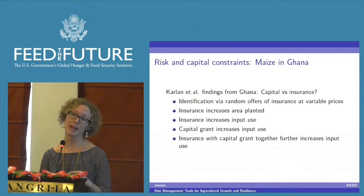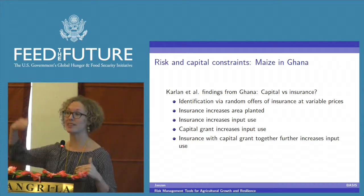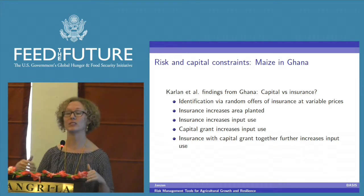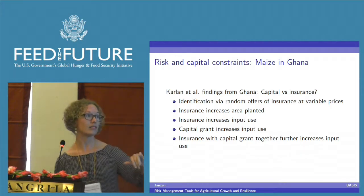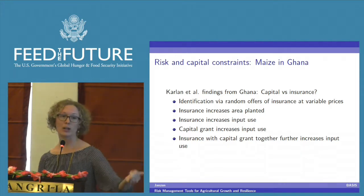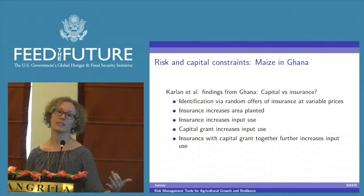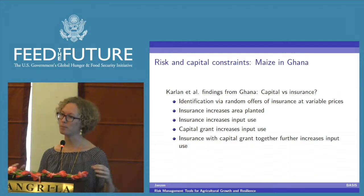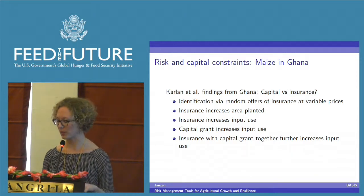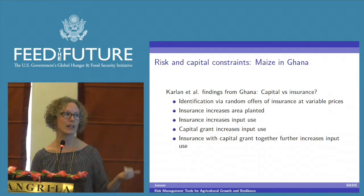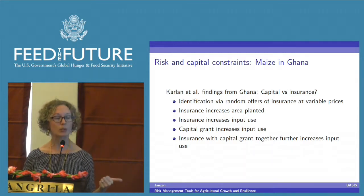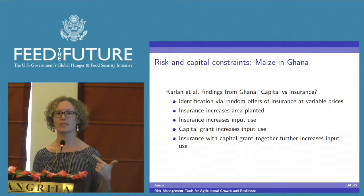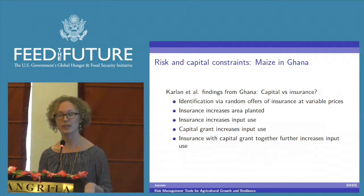Furthermore, when you combine capital with insurance, you have an even higher level of area planted and input use. So alleviating both the capital constraints and the insurance constraints together produces the greatest effect.